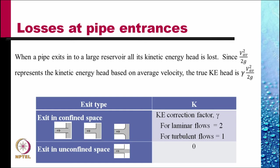When a pipe exits into a large reservoir, all its kinetic energy head is lost. Since V squared divided by 2g represents the kinetic head based on the average velocity, the true kinetic energy head is gamma times V squared divided by 2g, where gamma is the kinetic energy correction factor.